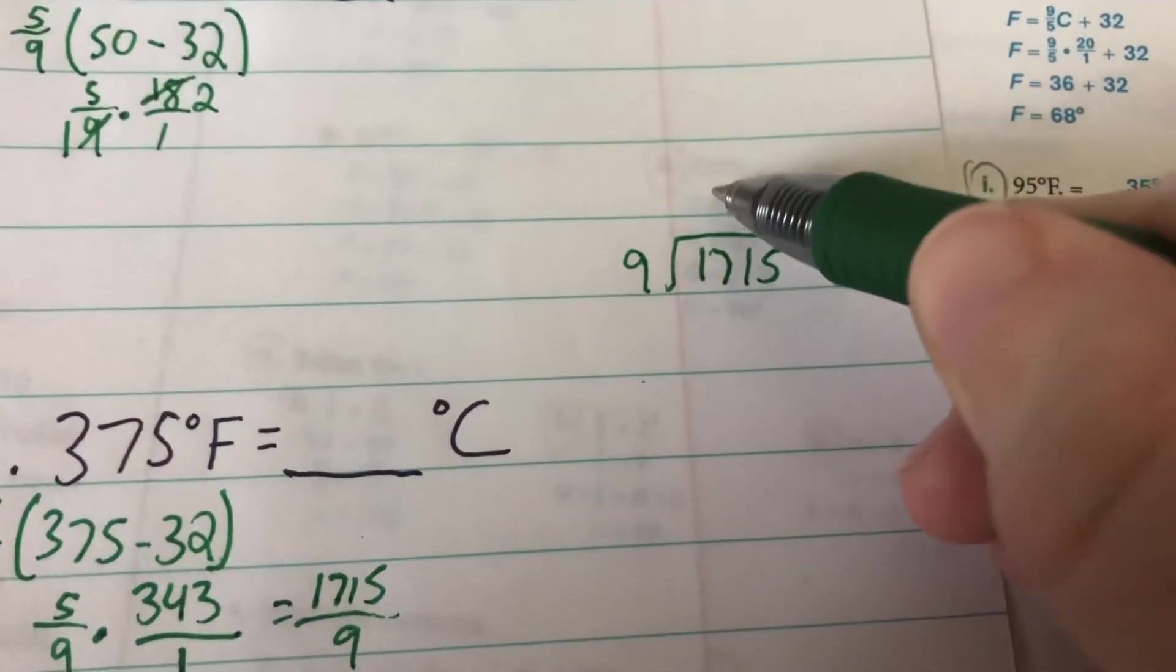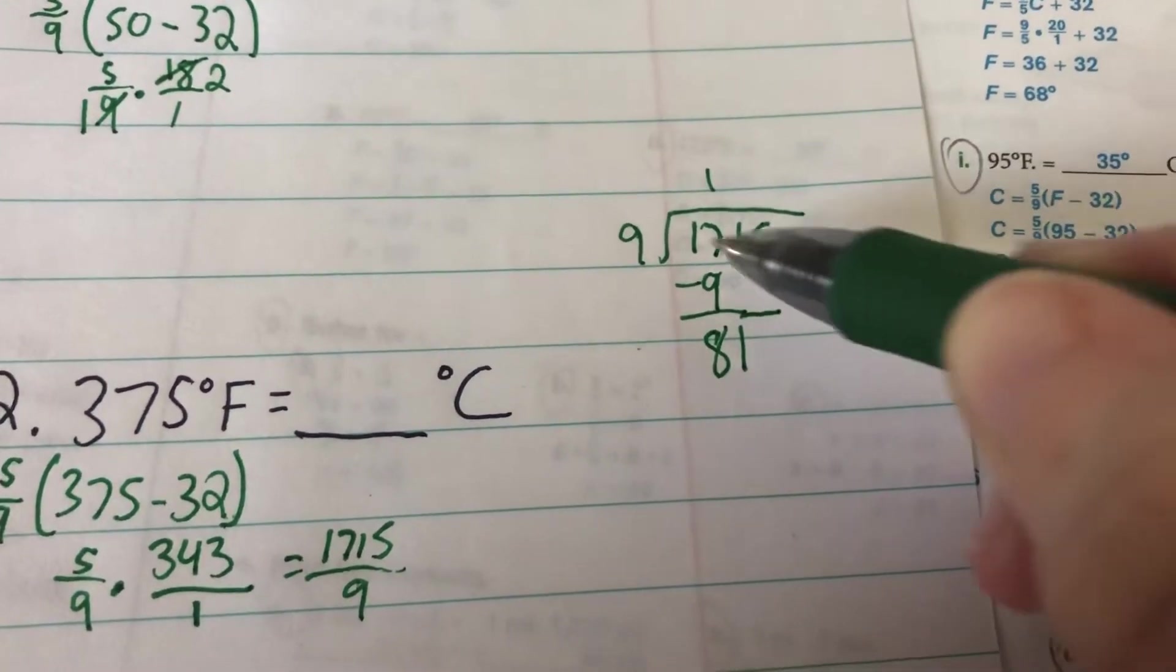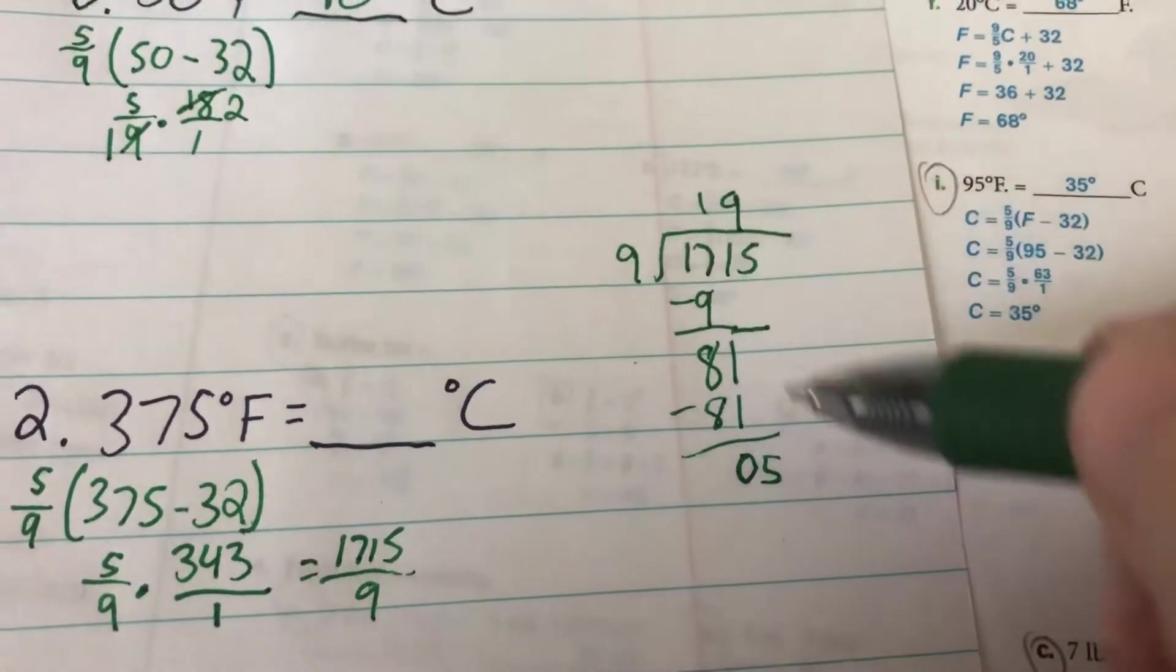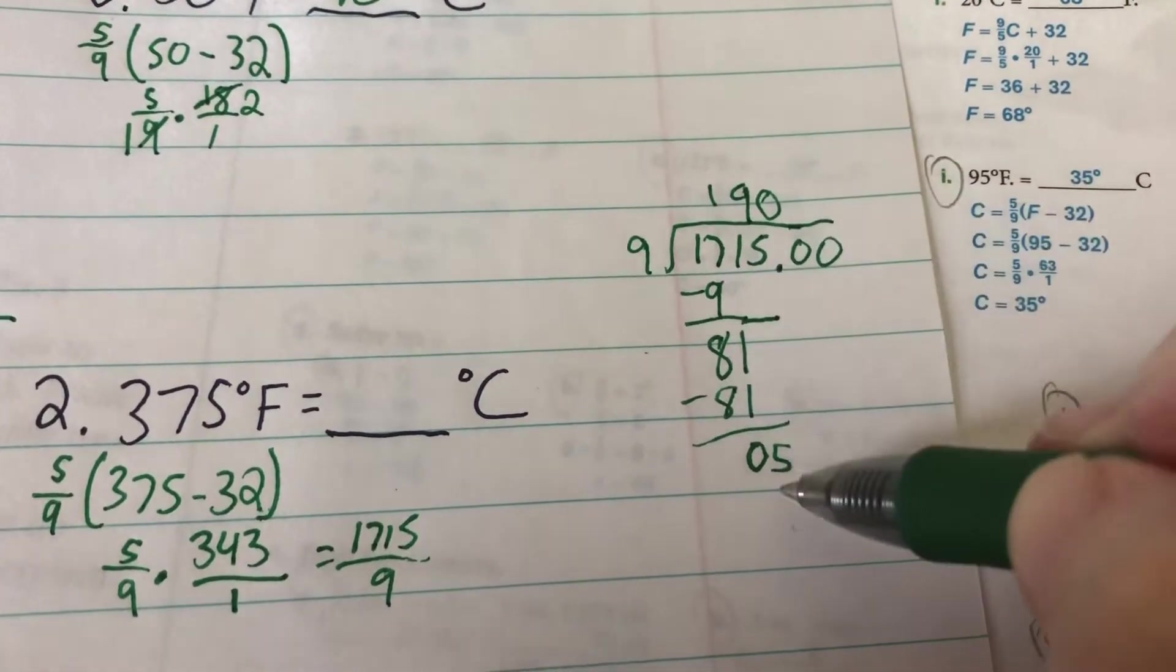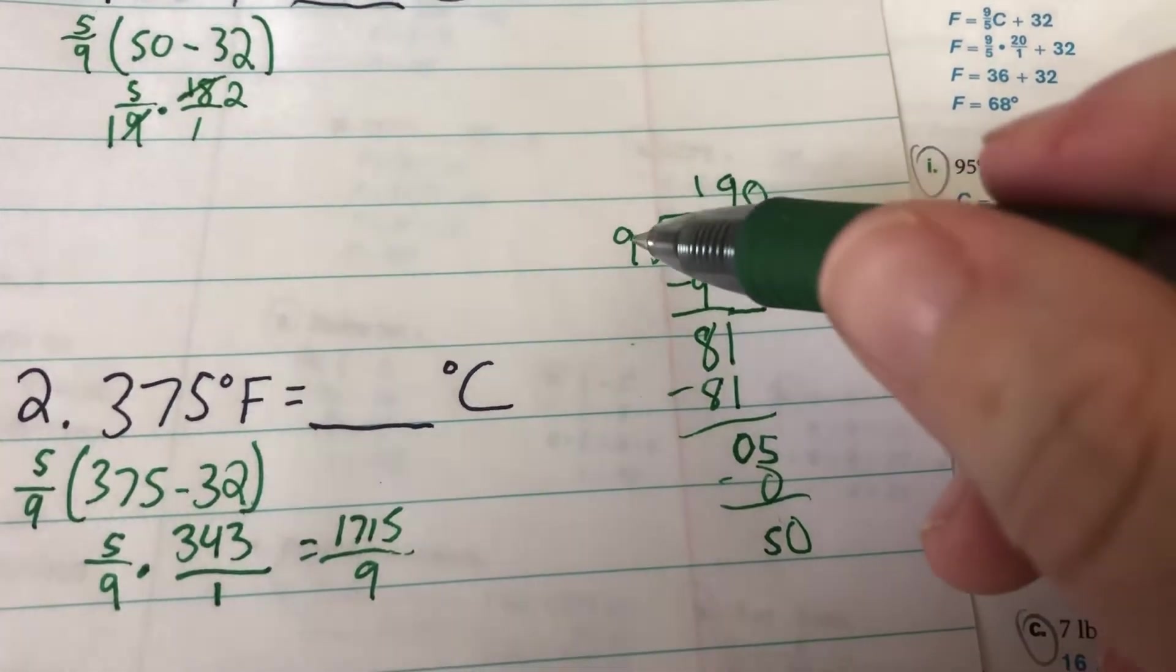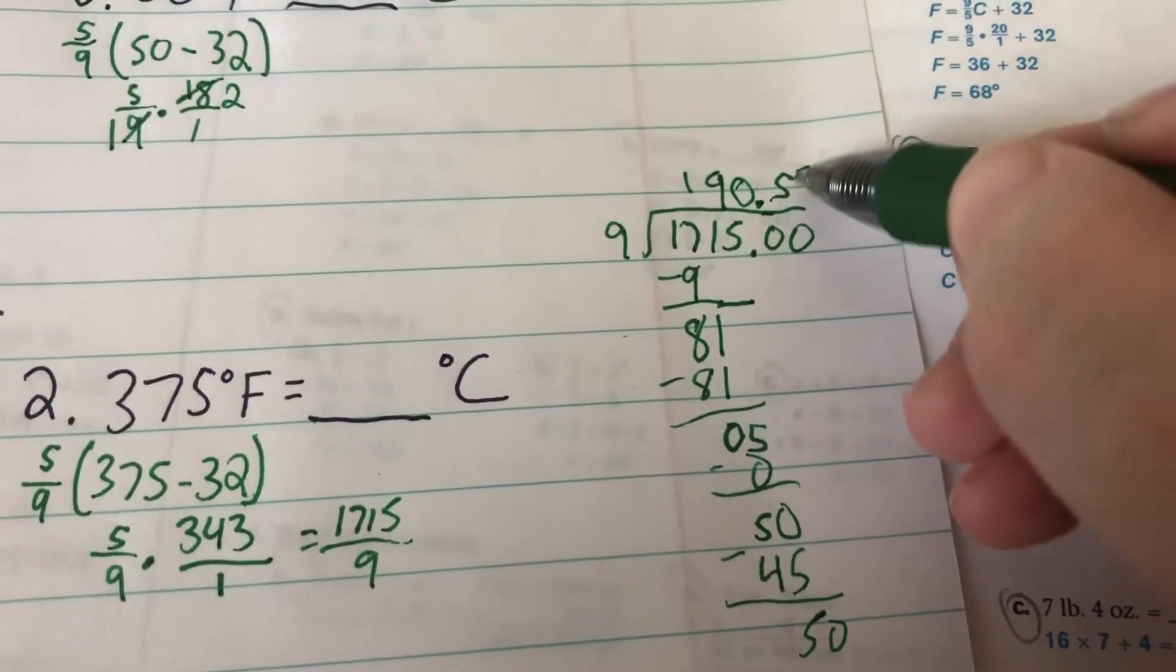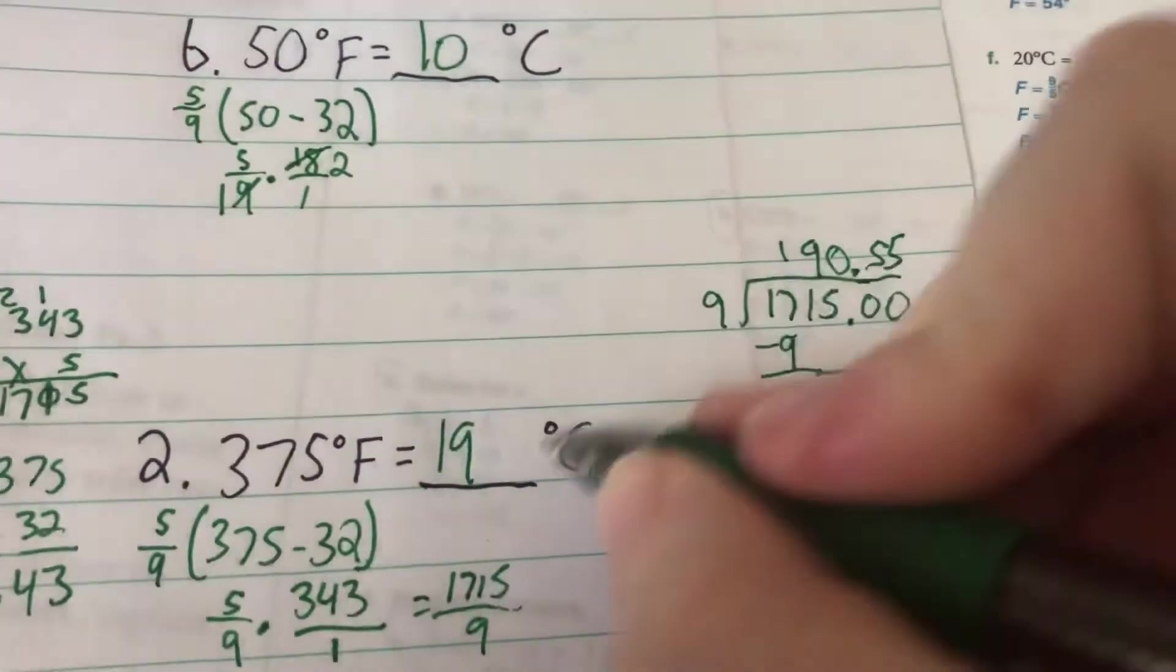1715 divided by 9. 9 goes into 17 one time. Subtract, it is 8. Bring down the 1. 9 goes into 81 nine times. 9 times 9 is 81, 0. Bring down my 5. 9 goes into 5 zero times. 0 times 9 is 0, 5. 9 goes into 50, 5 times 45, 5. And that would be repeating. So 190.55 rounded to the nearest degree would be 191 degrees Celsius.